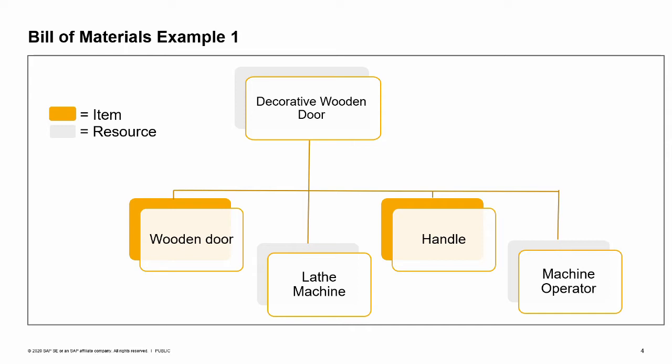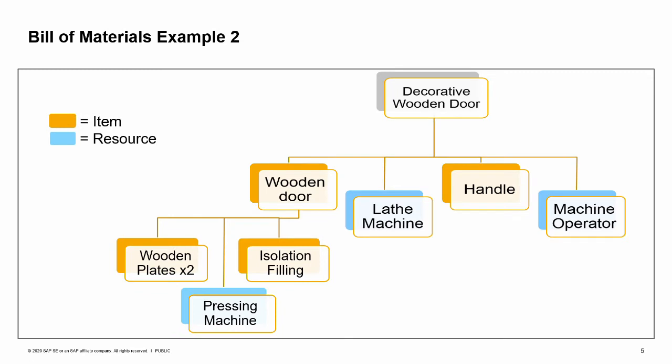Note that the finished goods are also defined as items, master data, in the system. A Bill of Materials may have several levels. A component item can also be an item produced from another Bill of Materials. In our example, the wooden door is a produced item from a second level of Bill of Materials that has two items and one resource.